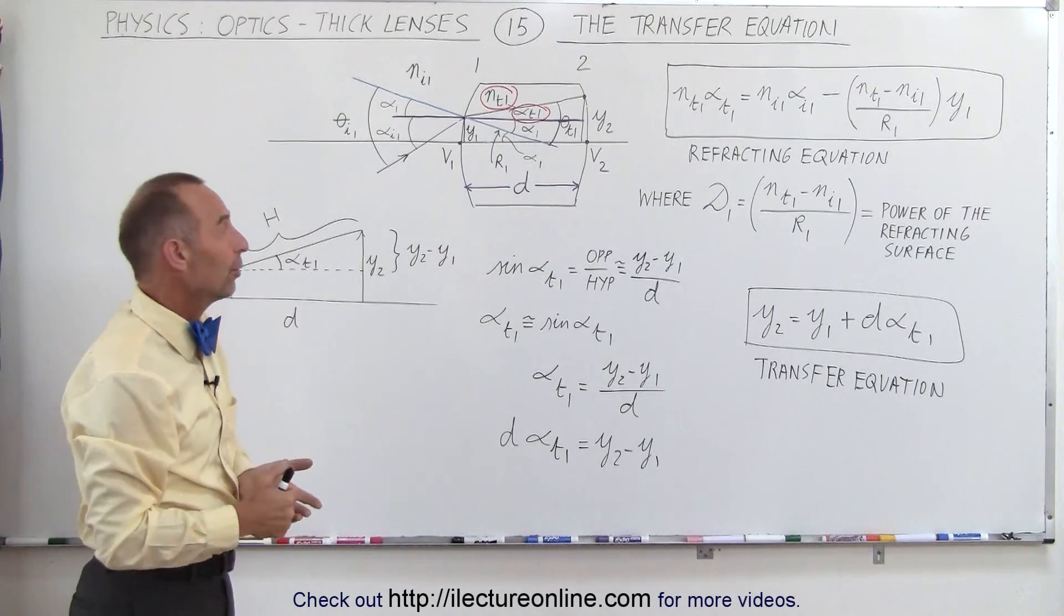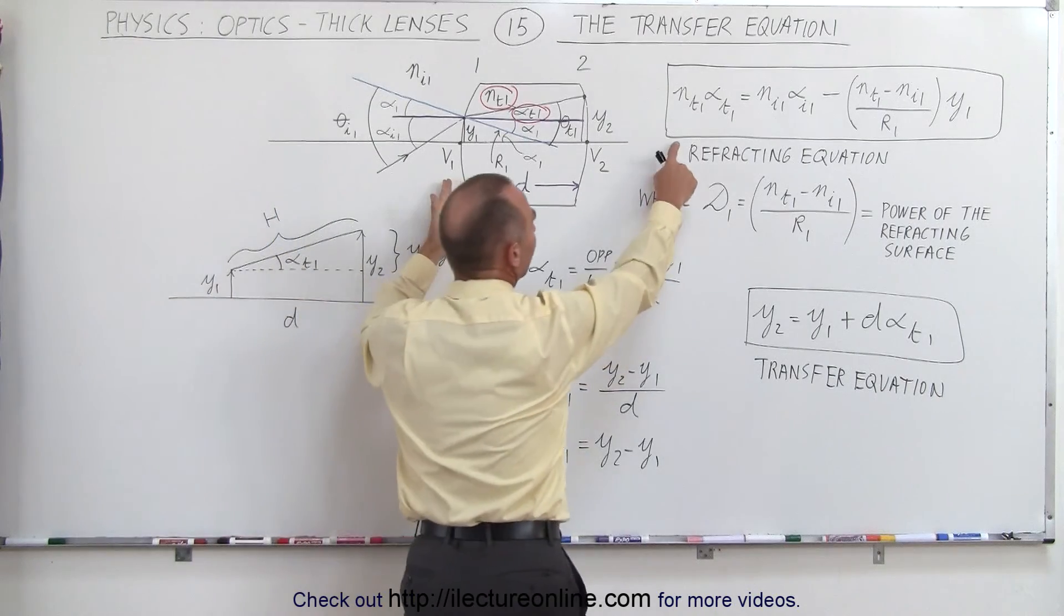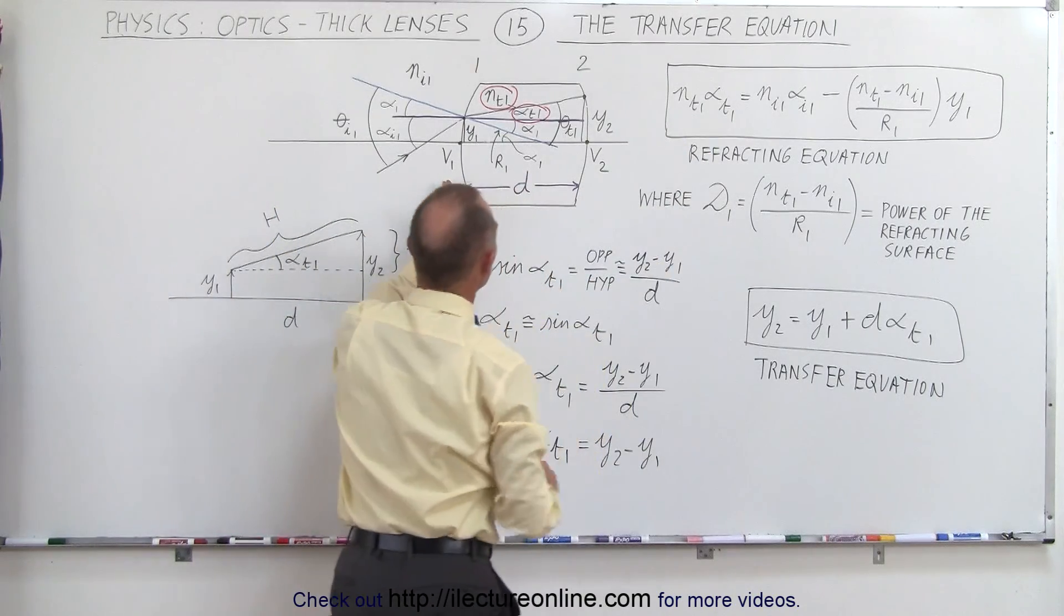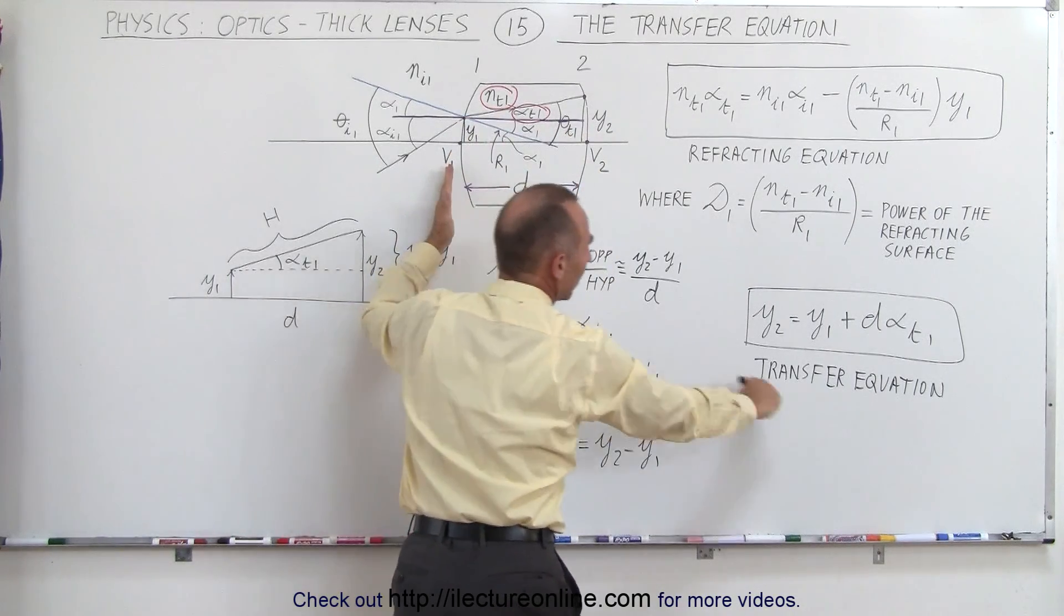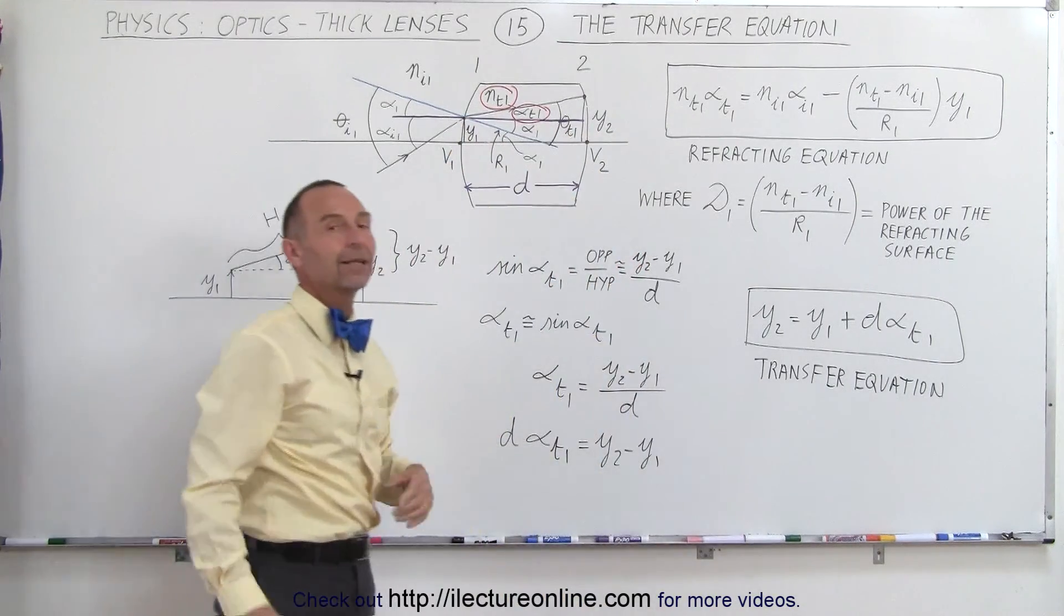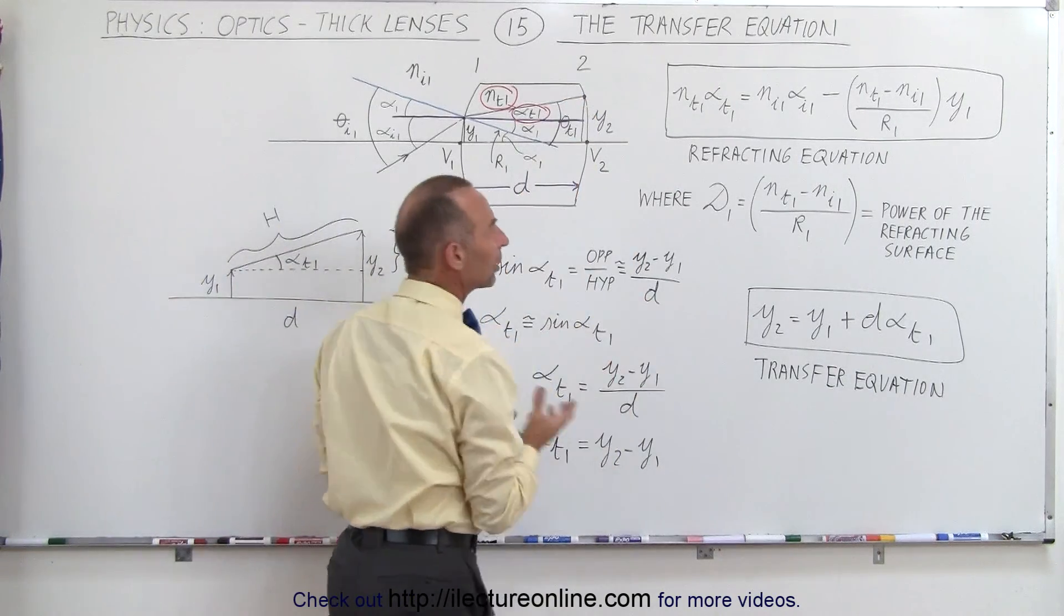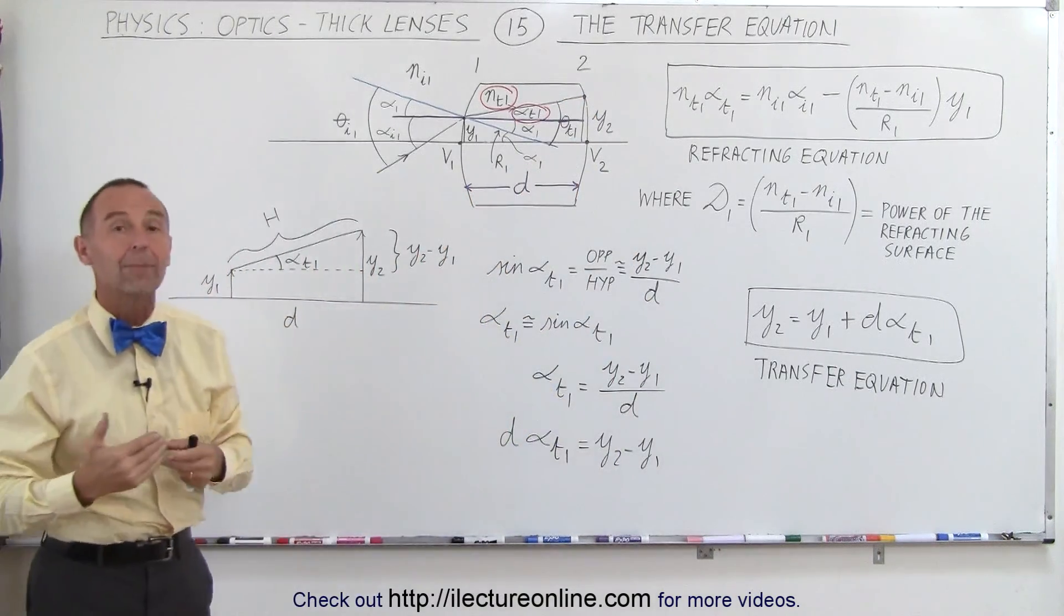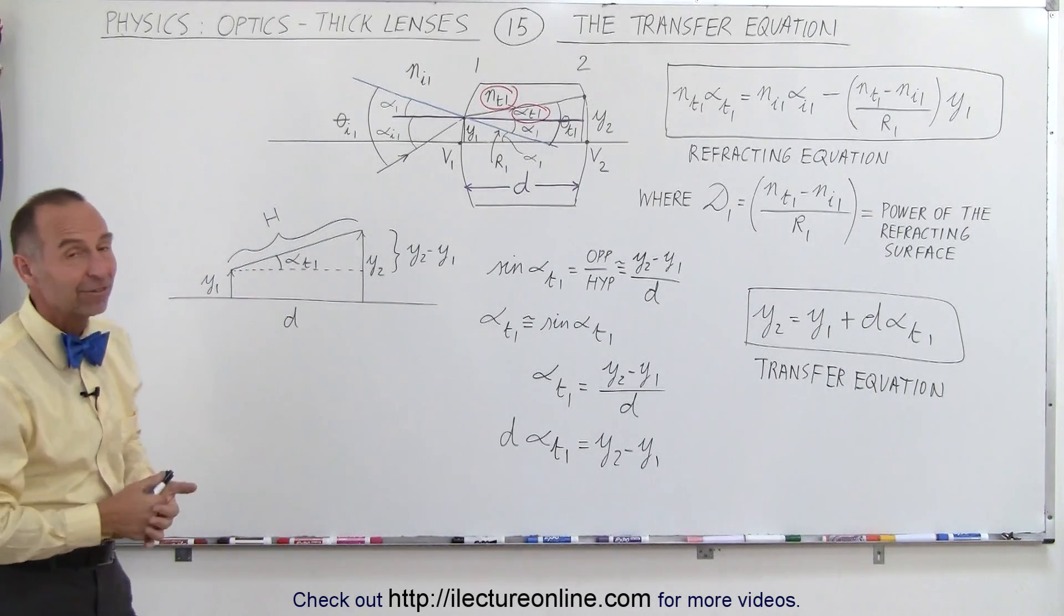So now we're two-thirds there. We now know what happens at the front boundary, using the refracting equation across that boundary. We now know what happens on the transition from the front boundary to the back boundary with the transfer equation. On the next video, we'll now attack what happens on the back boundary, and then we can describe as a whole what happens as the ray travels through a thick lens. And that's how it's done.